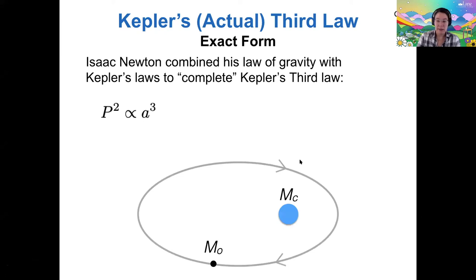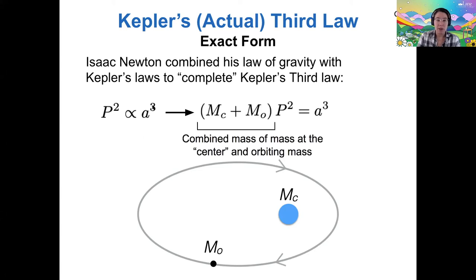The setup is like this. If I have some mass, I'm going to call it MC, the mass at the center of the orbit, and then MO, the mass of some orbiting object, then if I put Newton's law and Kepler's laws together, the combined mass of that whole system times the period of the orbiting body squared is equal to the semi-major axis of that orbiting body cubed.